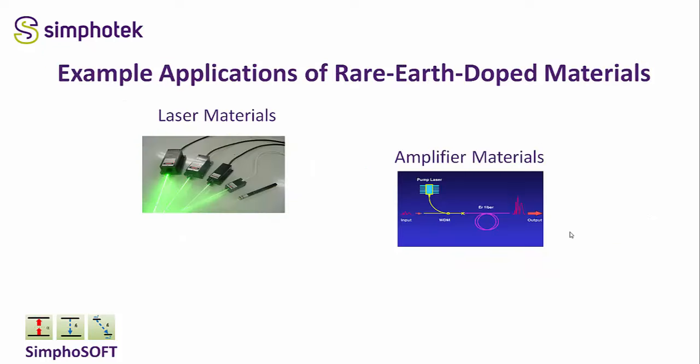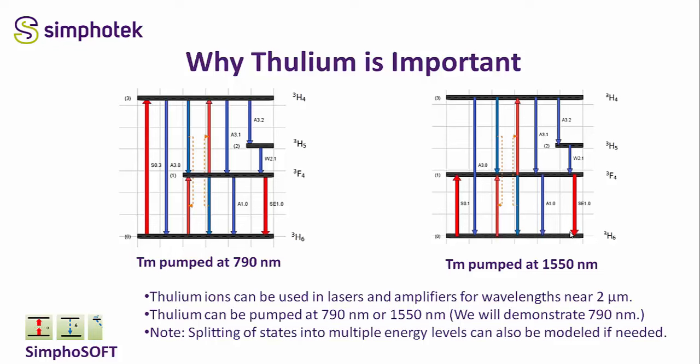Example applications of rare-earth-doped materials include use for laser materials and amplifier materials. Thulium ions can be used in lasers and amplifiers for generating wavelengths near 2 microns. Thulium can be pumped at 790 nanometers or 1550 nanometers. The energy level diagram of thulium shows it being pumped at 790 nanometers from the ground state labeled 0 to the excited state labeled 3, with states 0, 1, 2, and 3.